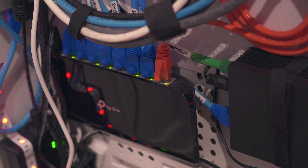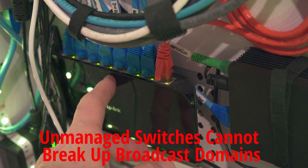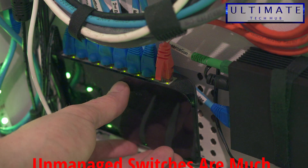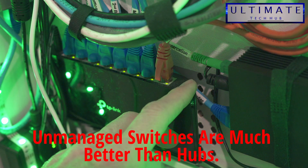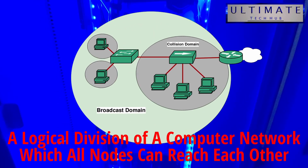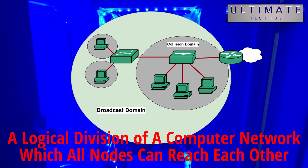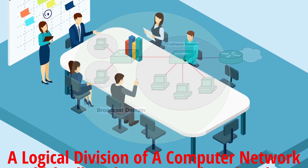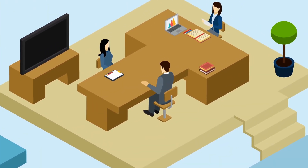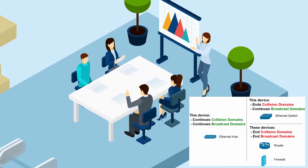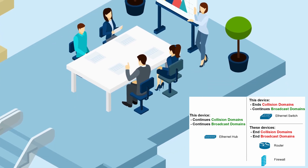The third thing a switch can't do is break up broadcast domains. Like I said before, they can break up collision domains, which is a big benefit over hubs. But they cannot break up broadcast domains. A broadcast domain is a logical division of a computer network in which all nodes can reach each other by broadcast at the data link layer. Routers and managed switches can break up broadcast domains as well as collision domains.